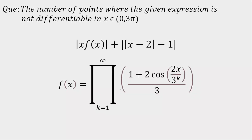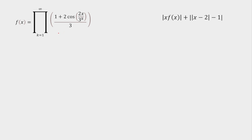Today, we are going to do a question from continuity and differentiability. The question is: number of points where the given expression is not differentiable in the interval (0, 3π) open. The given expression is mod of x·f(x) plus mod of |x minus 2| minus 1. The first thing we have to do is simplify f(x), because once we simplify f(x), we will get the number of points where this expression is non-differentiable.